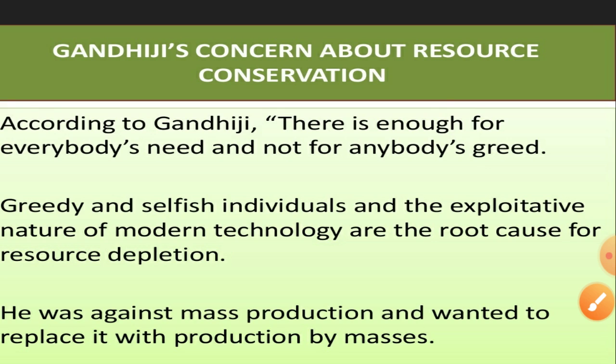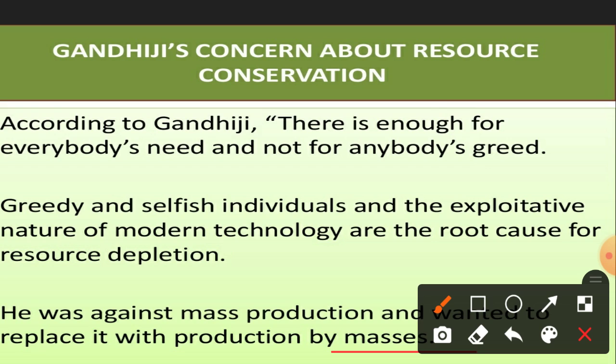Gandhiji wanted to replace mass production with production by the masses — meaning production should not be in abundance by a few, but production should involve the maximum number of people in society.